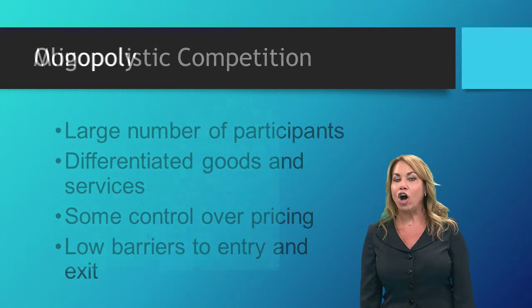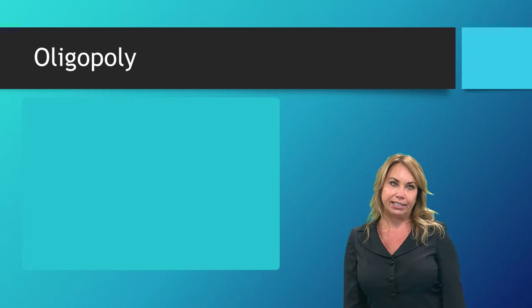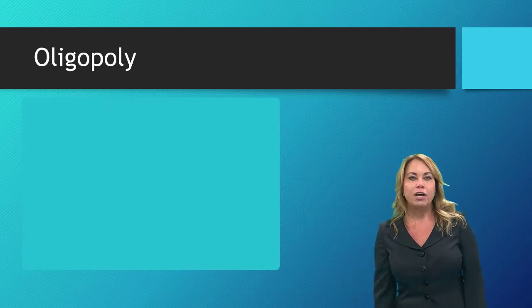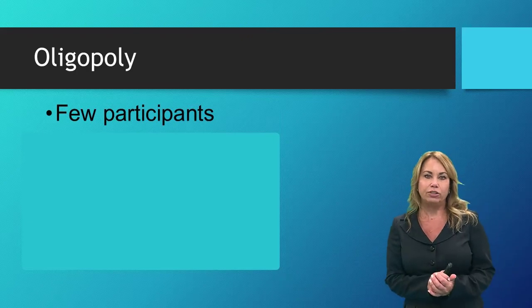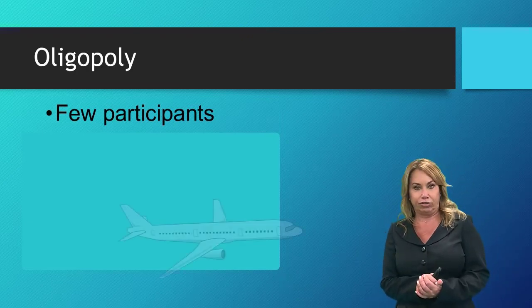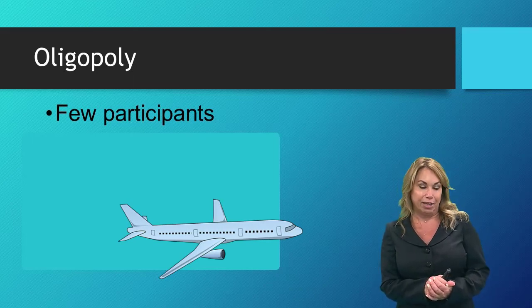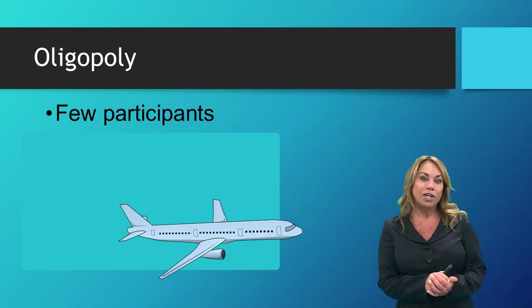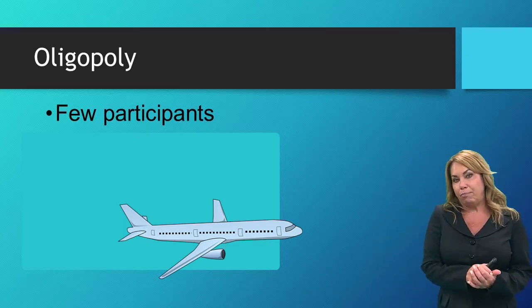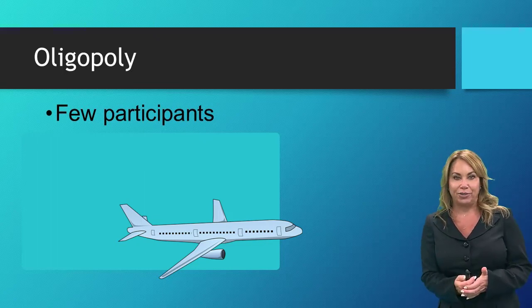Next we're going to take a look at an oligopoly. In an oligopoly we have very few participants in the market. A great example is the airplane industry — if I decide tomorrow that I want to buy an airplane, I have a few suppliers I can buy from, maybe McDonnell Douglas, maybe Boeing. But there aren't as many airplane manufacturers as there are toothpaste manufacturers.